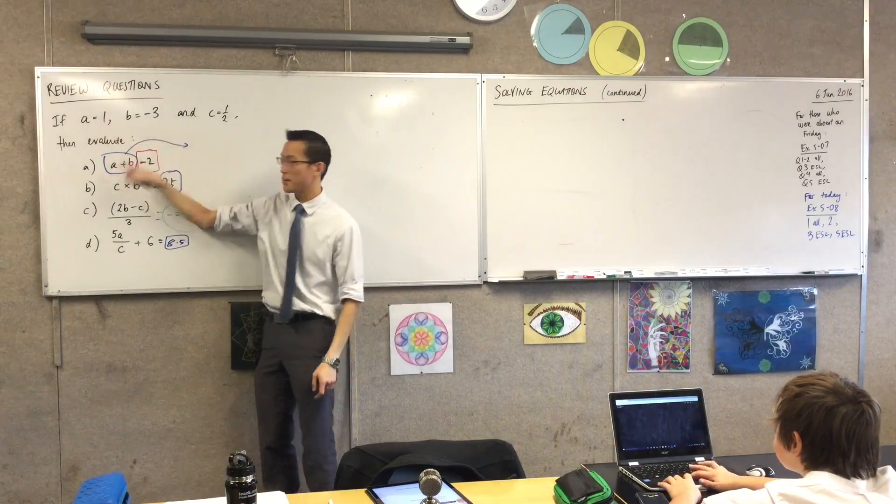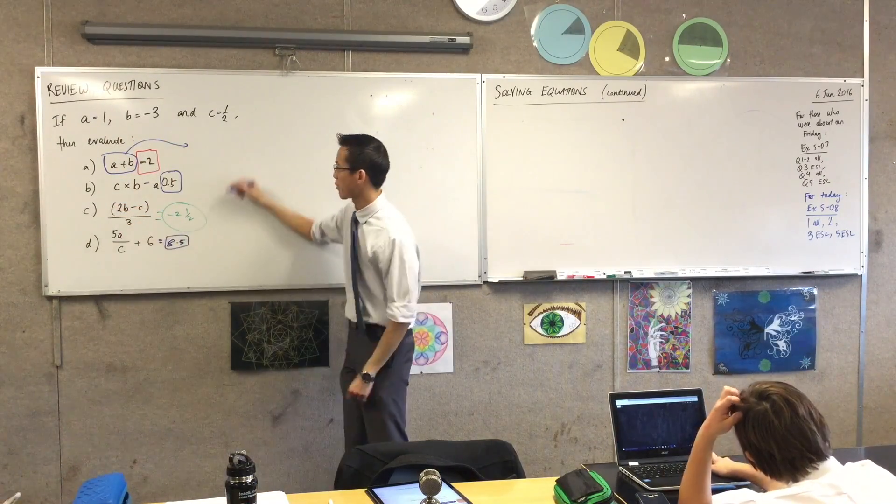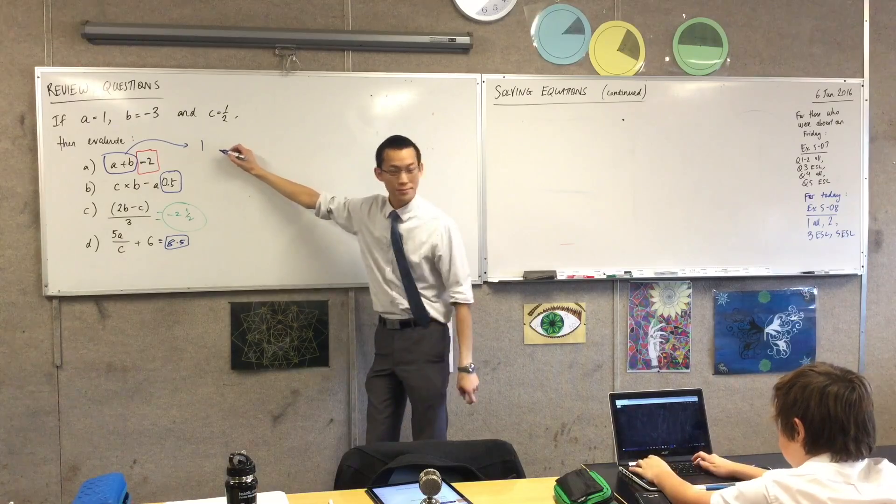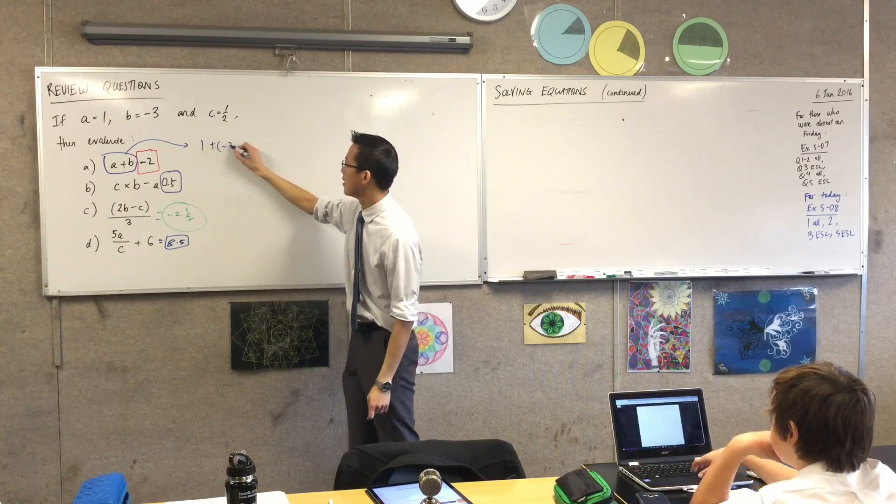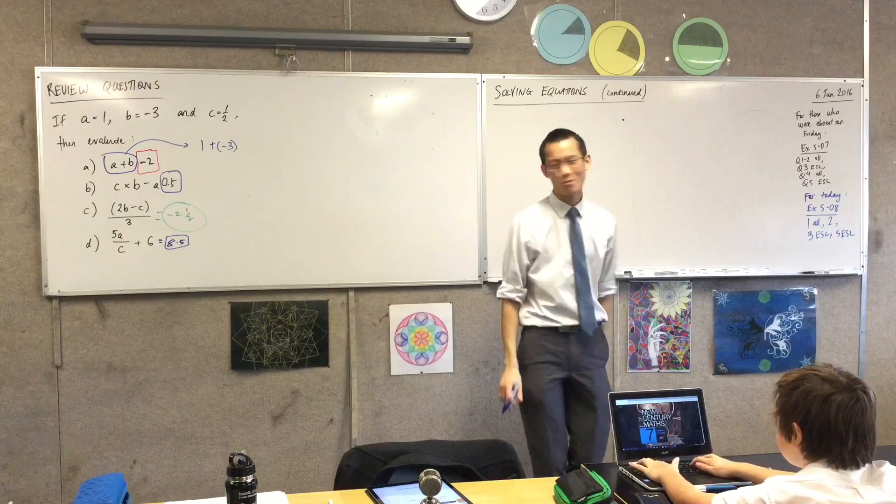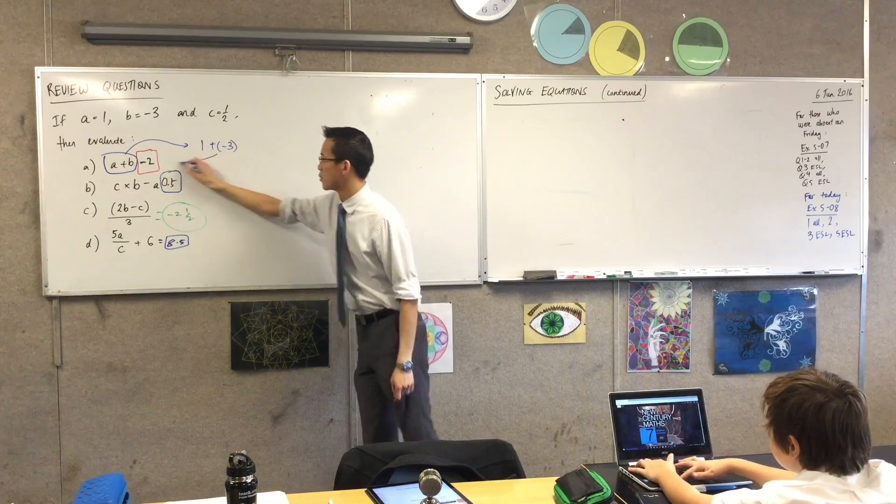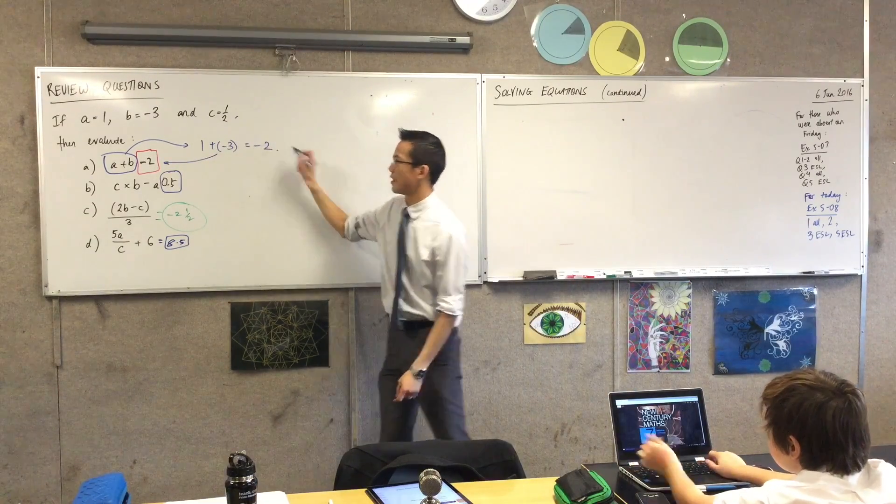So I'm going to pop these numbers back into their slots and exactly like Frank said, the A is a 1 and you're adding negative 3 to that. So this is calling you back to integers. So that does equal negative 2, so I would have written that there. Lovely.